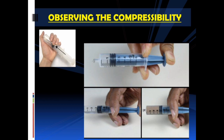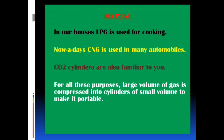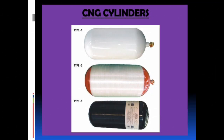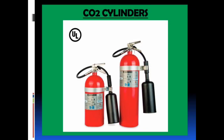Key point: in our houses, LPG is used for cooking; nowadays, CNG is used in many automobiles; CO₂ cylinders are also familiar to you. For all these purposes, a large volume of gas is compressed into cylinders of small volume to make it portable. Can you guess what are the other benefits of the highly compressible nature of gases? LPG cylinders — you are very familiar with them; a huge amount of gas is compressed into these cylinders. Here are different types of CNG cylinders, and you might have already observed carbon dioxide cylinders here and there.